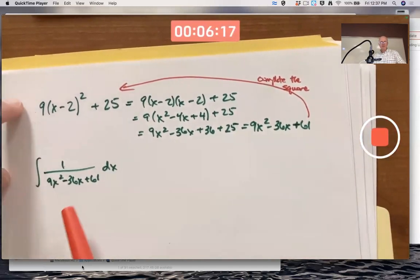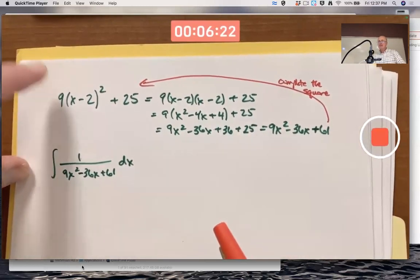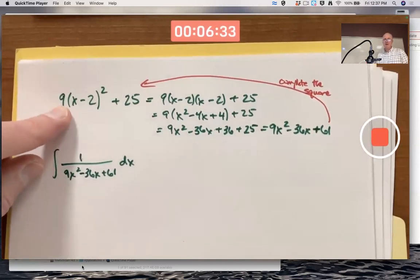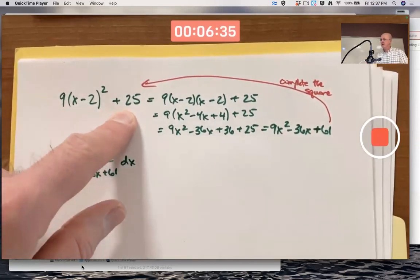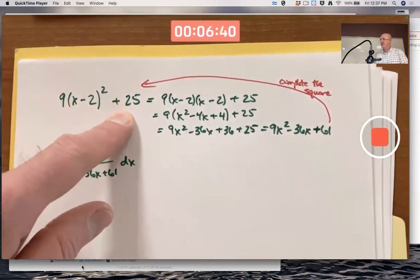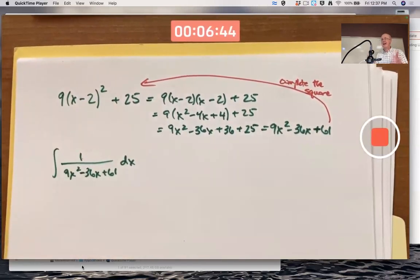Complete the square to write the bottom of the function like this, instead of like that. And when it's in this form, that's trig substitution, perhaps. Something squared plus something else squared. One of the somethings involves the variable, one doesn't.